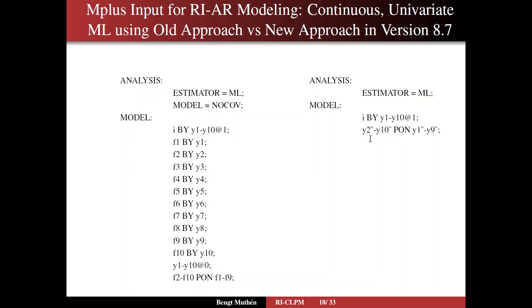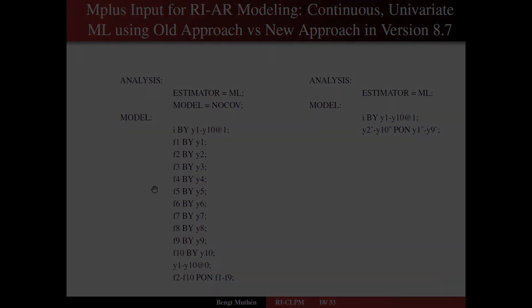And that's all you need to do for the univariate case. You have a random intercept and then AR1 regressions among the residuals. And then you can imagine then that going from this univariate case to the bivariate case will seem very simple to specify, instead of having to add all of these factors by hand.